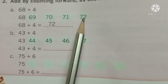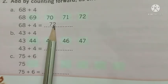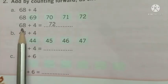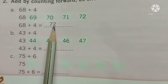1, 2, 3, 4 numbers we wrote. Now we reach the number 72. Therefore 68 plus 4 equals 72.